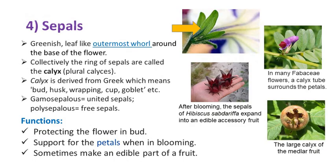Sepals are the greenish or sometimes brownish, leaf-like, outermost whorl around the base of the flower. Collectively, the ring of sepals is called the calyx — in plural, calyces. Calyx is derived from Greek, which means bud, husk, wrapping, cup, or goblet. Gamosepalous means united or fused sepals, whereas polysepalous means free sepals.